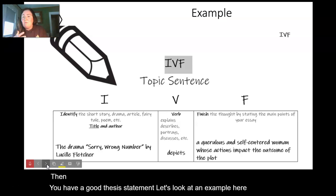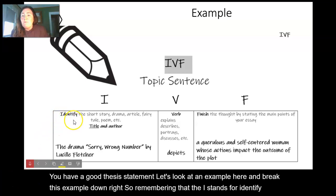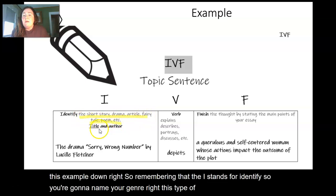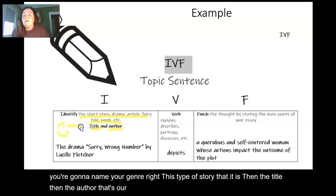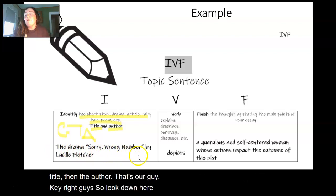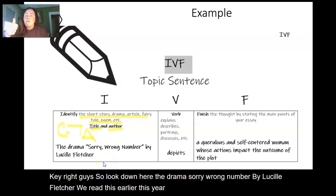Then you have a good thesis statement. Let's look at an example here and break this example down. Remembering that the I stands for identify, so you're going to name your genre - the type of story that it is - then the title, then the author. That's our GTA.